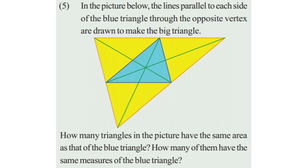The first homework problem: in the picture below, lines parallel to each side of the blue triangle through the opposite vertex are drawn to make a big triangle. How many triangles in the picture have the same area as the blue triangle? How many have the same measurements as the blue triangle? It is given that this line is parallel to this line, and this line is parallel to this line.